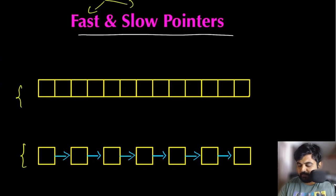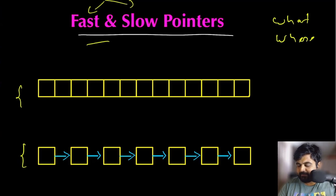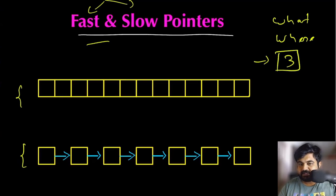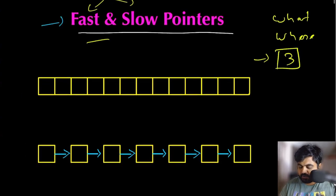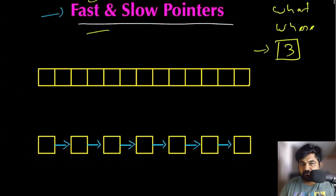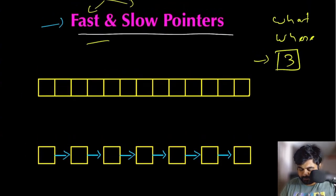In this video, I'm going to explain three things: first, what the fast and slow pointer technique is; then, where it is applicable and what type of problems it can solve; and finally, I'm going to show you three different real-life LeetCode examples that are asked in a bunch of different companies multiple times. So first, let's understand what the fast and slow pointer approach means.